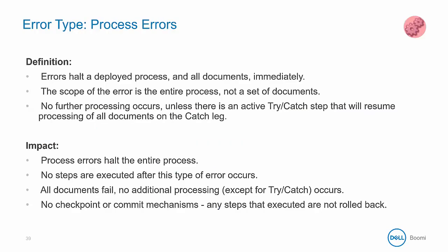There are three types of errors to consider in BOOMI: process errors, document errors, and atom errors. Process errors are those that halt the process and all documents immediately. The scope of this error is the entire process, not simply a set of documents. Nothing else will get processed unless there is a try-catch shape, in which case the process will funnel those documents down the catch path.